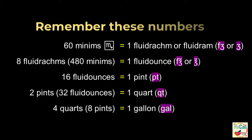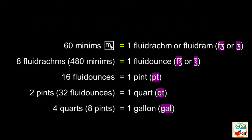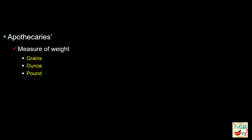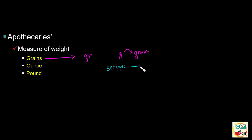You will need to remember their relationships. For apothecary measures of weight, we have the following units. Grains is written as 'gr,' not just 'g.' G is gram, used in the SI unit. The symbol of scruple looks like a backward e. Then we have ounce and pound. Ounce is written with edge with an additional cap. Roman numerals are used along with apothecary units.